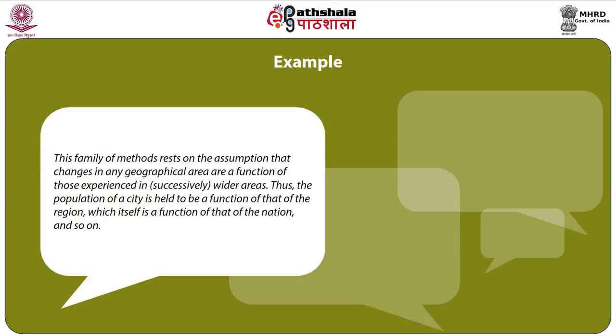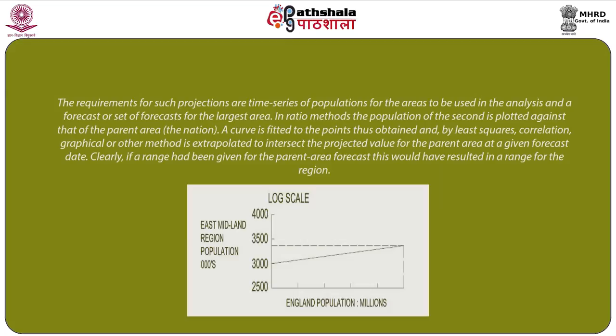The family of ratio methods rests on the assumption that changes in any geographical area are a function of those in successively wider areas — the population of a city is a function of the region, which itself is a function of the nation, and so on. The requirements are time series of populations for all areas and a forecast for the largest area. In ratio methods, the population of the sub-area is plotted against that of the parent area, a curve is fitted to the points, and extrapolated to intersect the projected value for the parent area at the forecast date. If a range is given for the parent area forecast, this results in a range for the region.